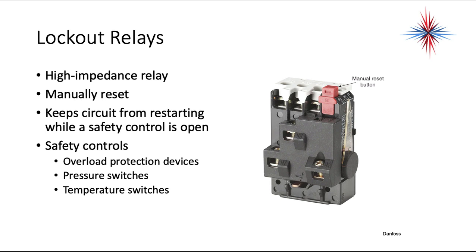Lockout relays are high-impedance relays that are manually reset. They keep a circuit from restarting while a safety control is open — they receive inputs from overload protection devices, pressure switches, and temperature switches. If an overload protection device trips, it will trip the lockout relay and force a manual reset. The reason for manual reset is so that someone actually goes and checks why the trip happened. Anytime a safety control is tripped, do not just reset the control — you need to find out why the safety control tripped.